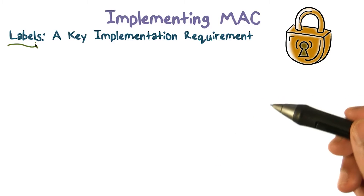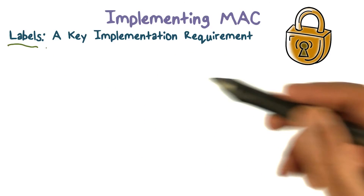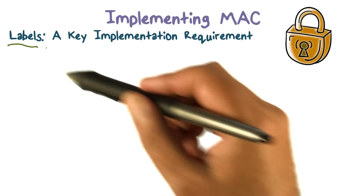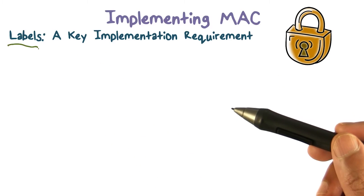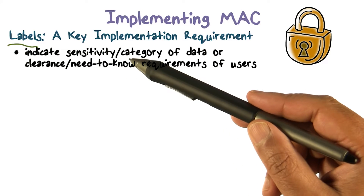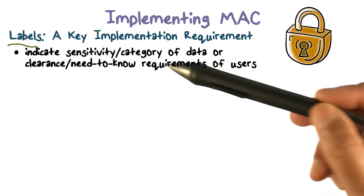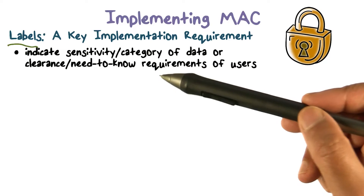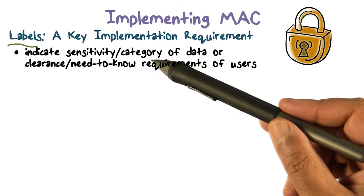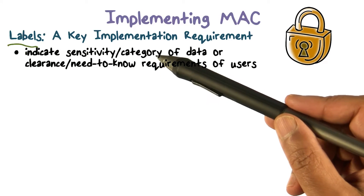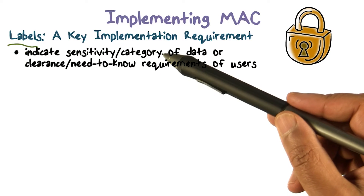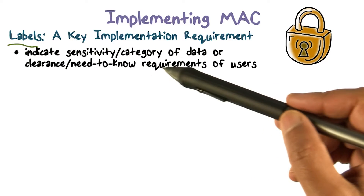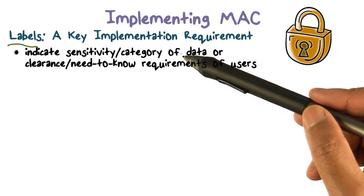Both users and resources or documents are going to have certain labels attached or associated with them, and they're going to be used in the way we make access control decisions. Labels are going to tell us how sensitive certain information may be. Labels also have something that describes the nature of the data — what topic, what area the data comes from. For example, payroll data. Labels could also include a category describing the nature of the data.